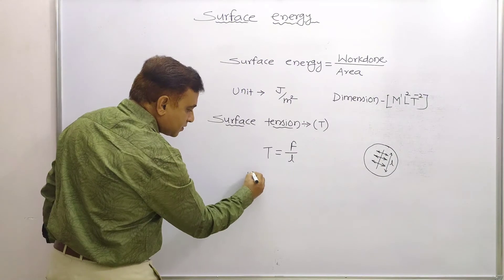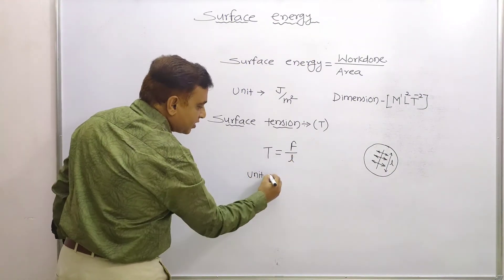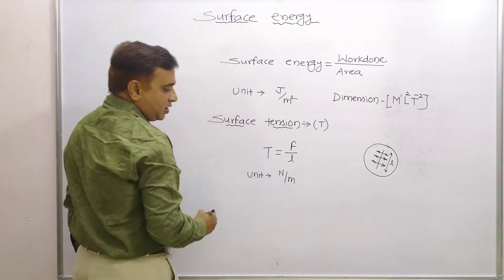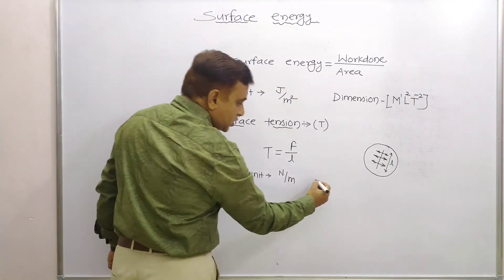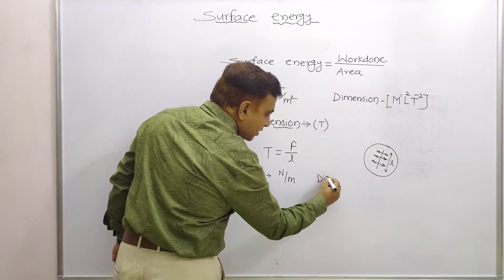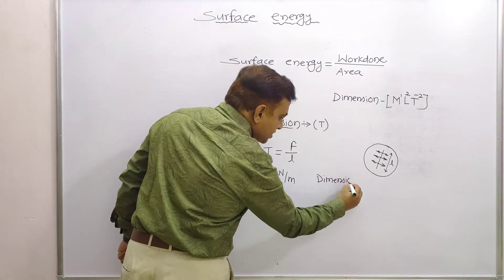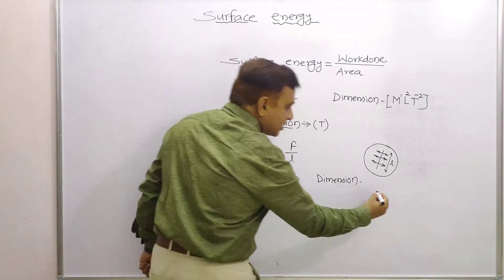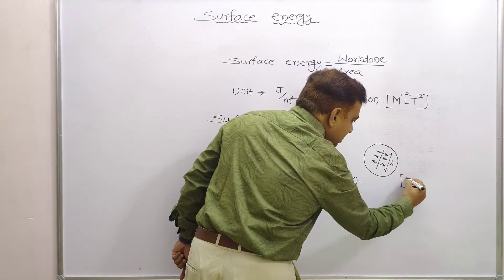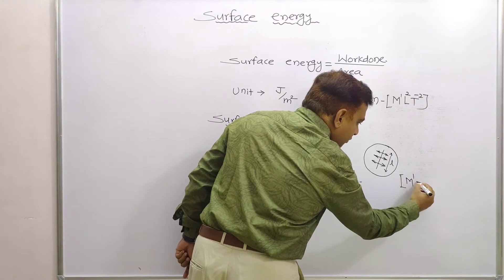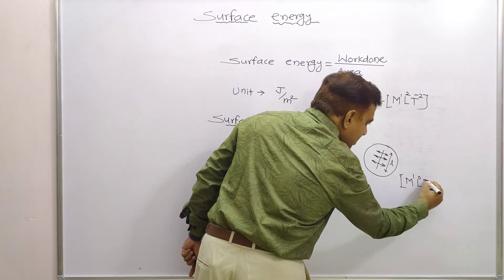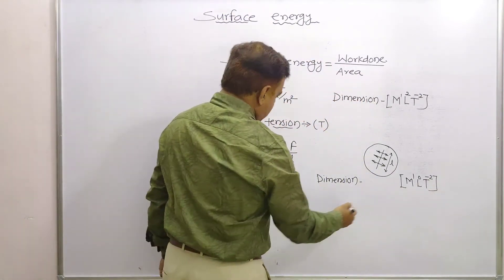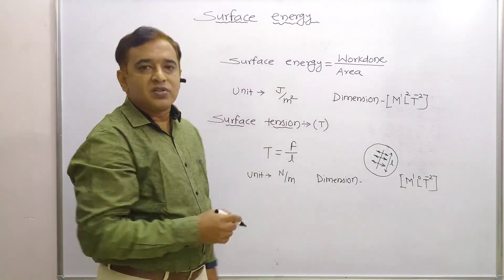What about the unit? The unit of surface tension is Newton per meter, since force is measured in Newton and length in meters. The dimension of surface tension is M raised to power 1, L raised to power 0, T raised to power minus 2.